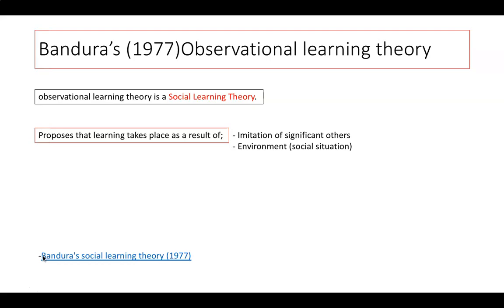Observational learning theory is a social learning theory. As humans, we watch others and we copy others. When we're children, we're aware of our elders and their actions, habits, and attitudes. Those we view as being of high status or significant others — for example, parents or a coach in sports — are much more likely to be copied than those we regard as relatively unimportant.